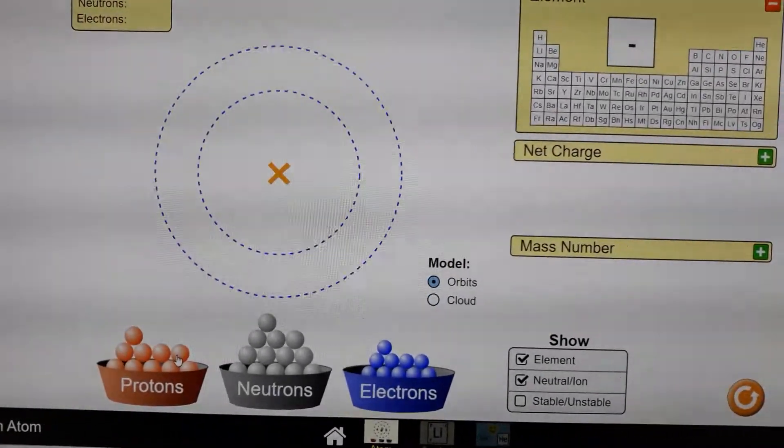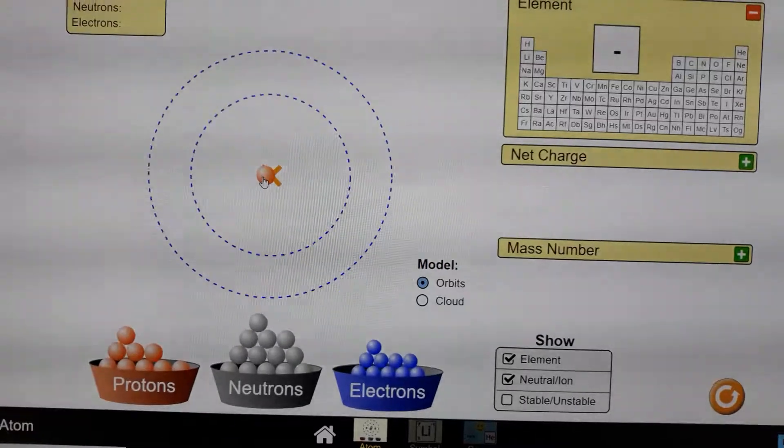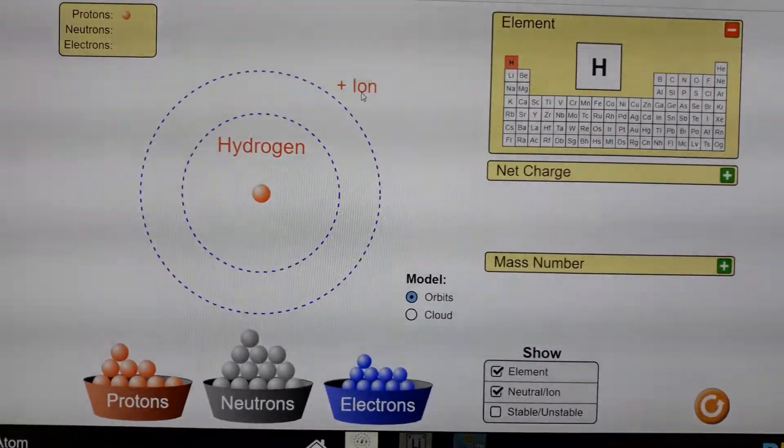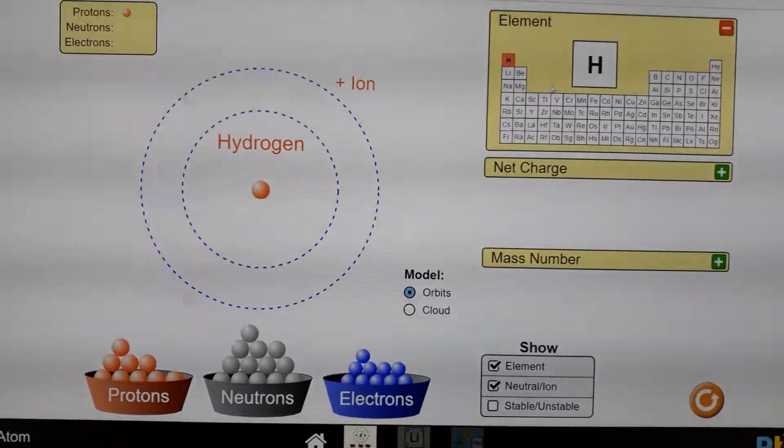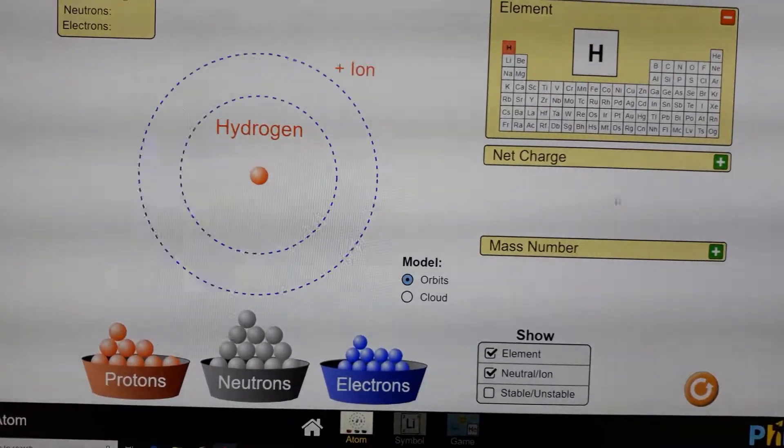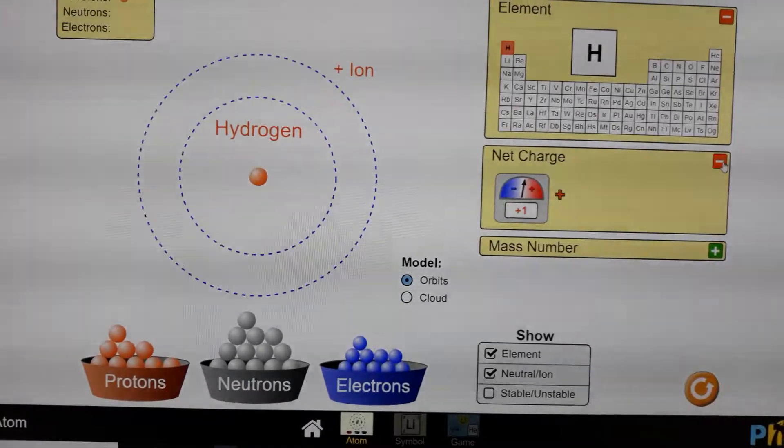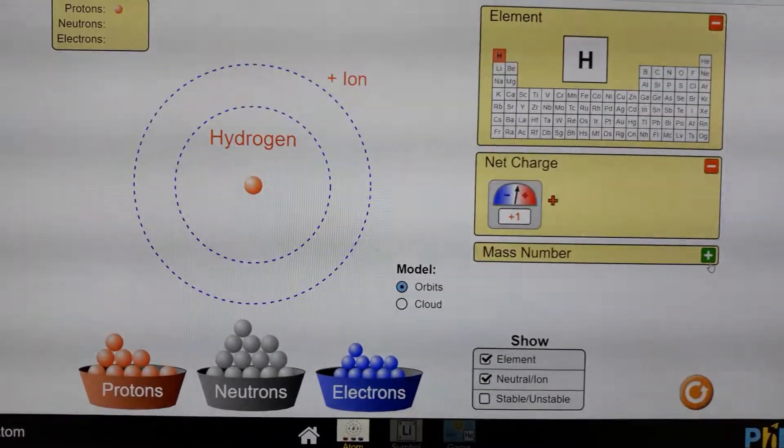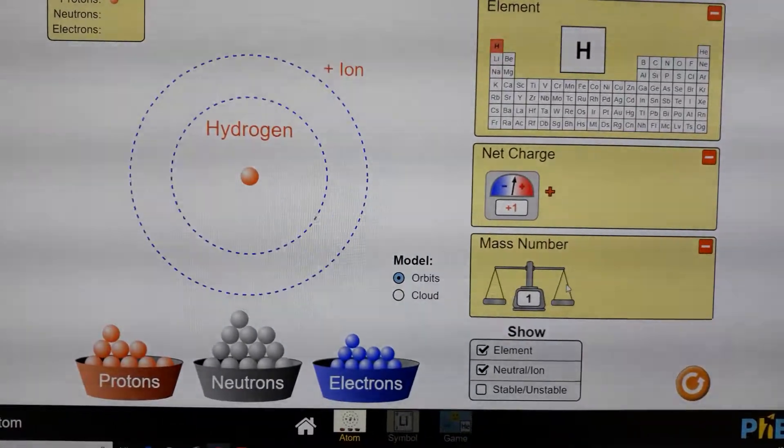So we can, for example, take a proton here. And when we put a proton, now we have an ion, a positive ion. This is a positive ion of hydrogen. We can see the net charge here if we want. It's a net charge of plus 1. We can see the mass number, there is 1.